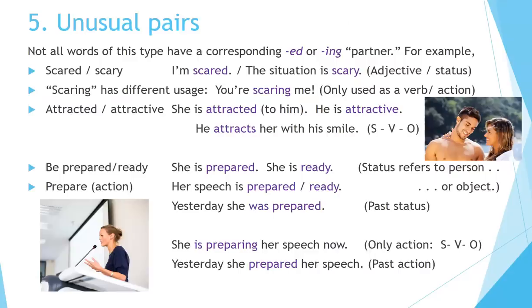Unusual pairs: not all words of this type have a corresponding -ed or -ing partner. For example, look at the pair 'scared' and 'scary.' I'm scared; the situation is scary. These are used as adjectives indicating status. 'Scaring' has different usage: you're scaring me — this is only used as a verb to indicate the action.